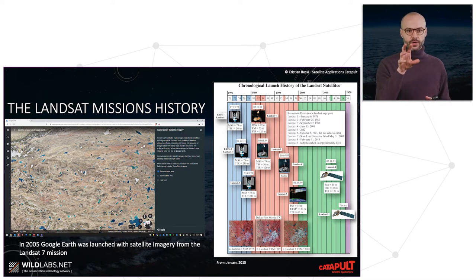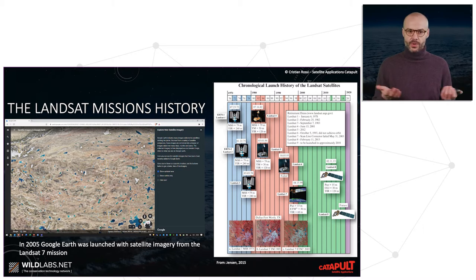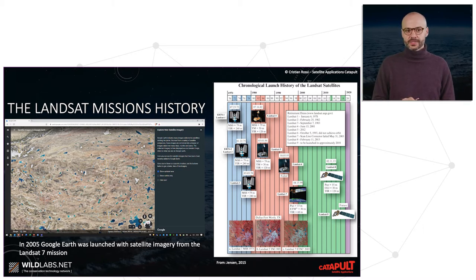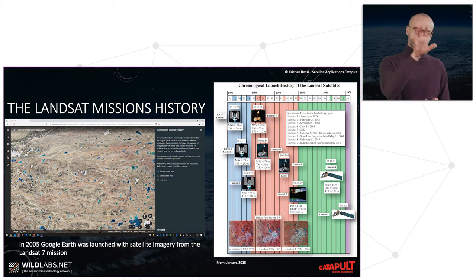Google Earth was launched in 2005 with satellite imagery from the Landsat 7 mission. Most of us know what Google Earth is, and that specific mission is used in Google Earth to represent data.